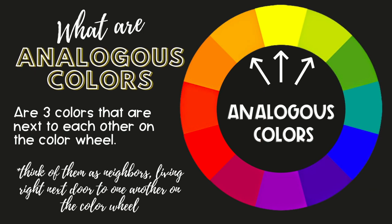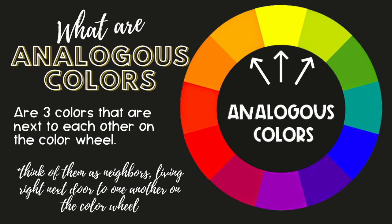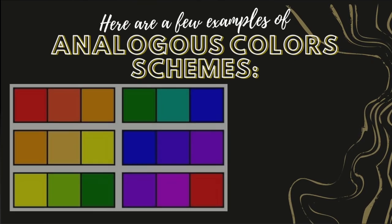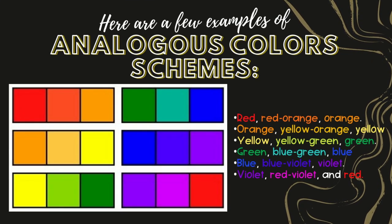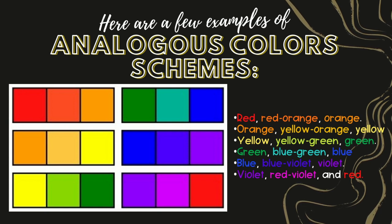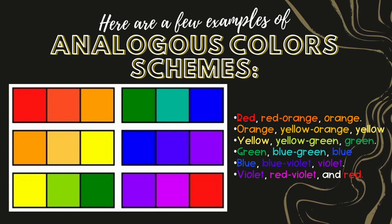To create our geodes today we're going to learn about color theory, in particular analogous colors — those are three colors that are next to each other on the color wheel. Think of them as neighbors living right next door to one another. Here are some common examples: red, red-orange, and orange. Remember, they are three colors that are right next to each other on the color wheel.